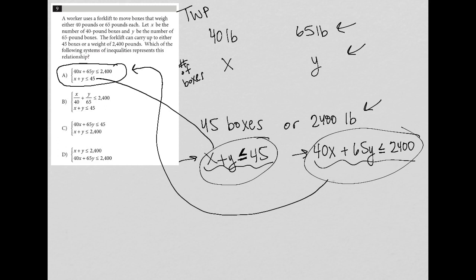And that the 40X plus 65Y is less than or equal to 2,400. Because again, the weight of the X boxes plus the weight of the Y boxes can be no more than 2,400 pounds. So that's my right answer. No need to look at the other ones.